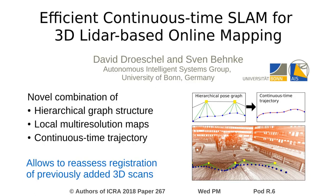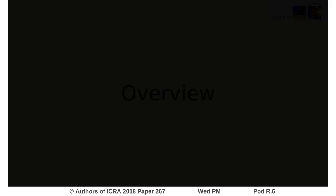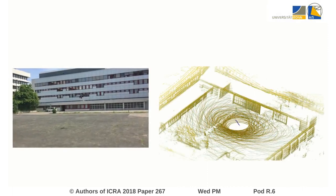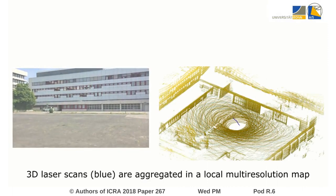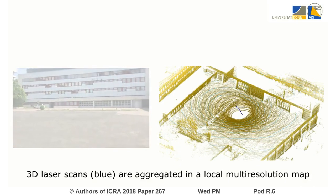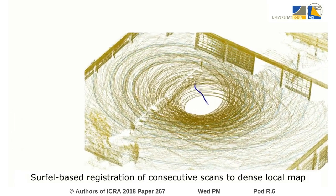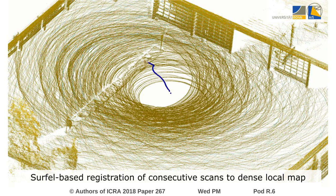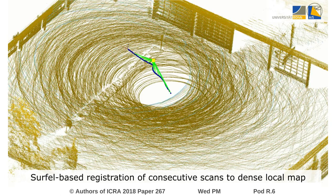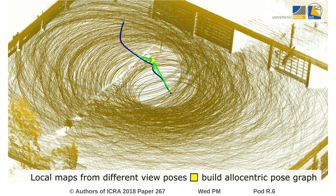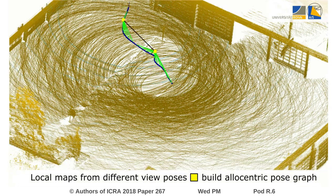In this paper, we present our approach for LiDAR-based simultaneous localization and mapping. Our method is based on efficient local mapping and a hierarchical optimization backend. LiDAR measurements are aggregated in local multi-resolution maps by means of SERFL-based registration. The local maps from different view poses are used in a multi-level graph for allocentric mapping and localization.